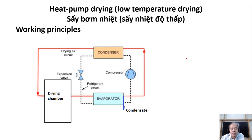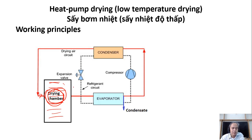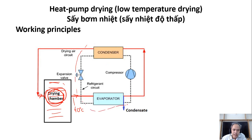This is the principle. We have a drying chamber — larger in reality, but shown small here. The air is introduced into the food and takes the water vapor from the food. The air entering the food might be at a temperature of, say, 40°C or 35°C. Then this is the cooling system — the refrigerator.